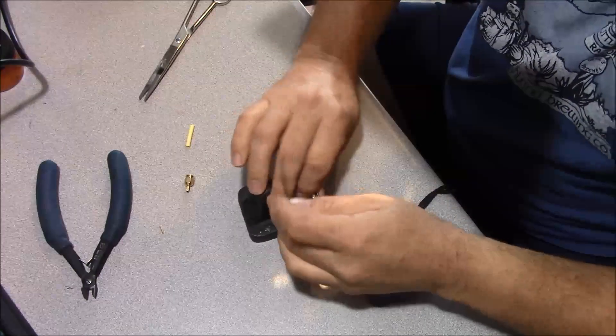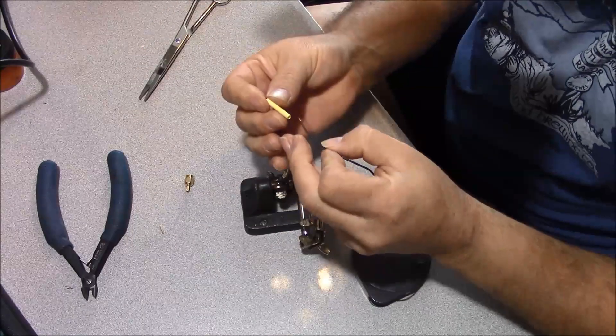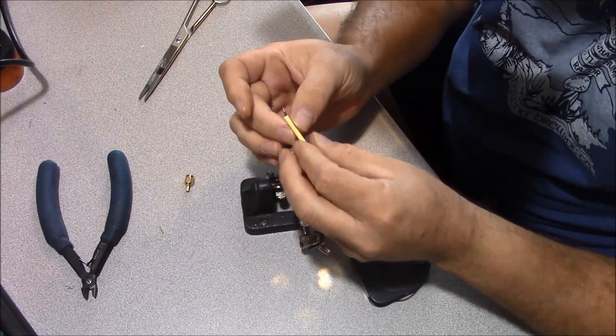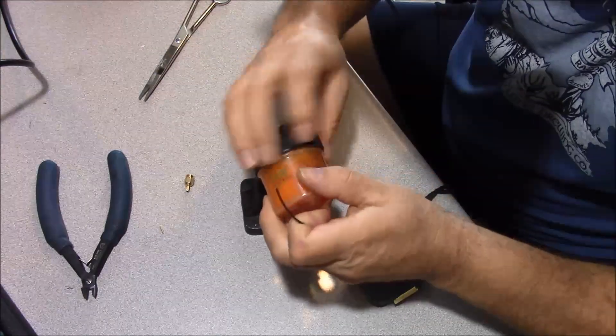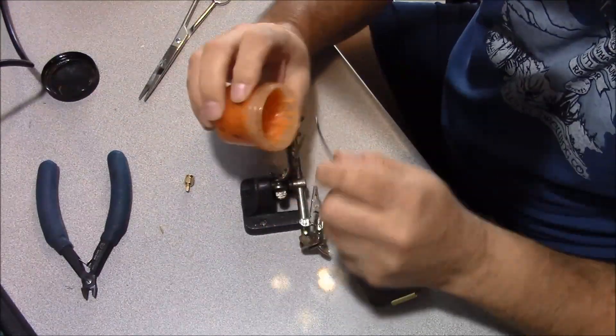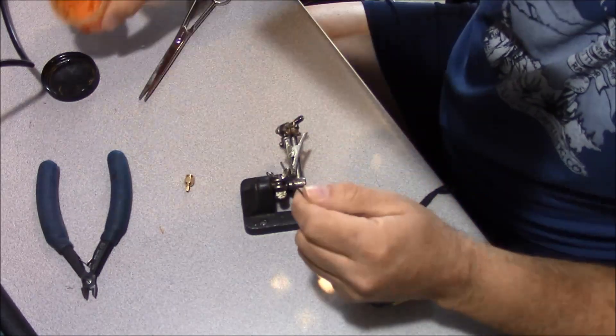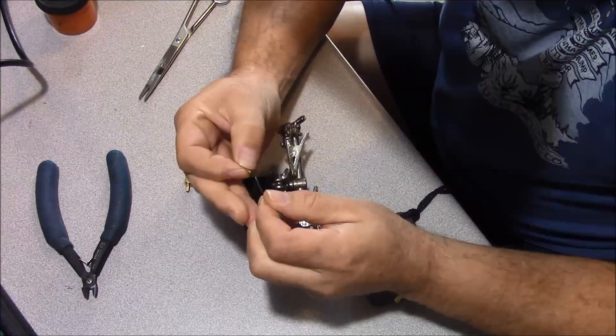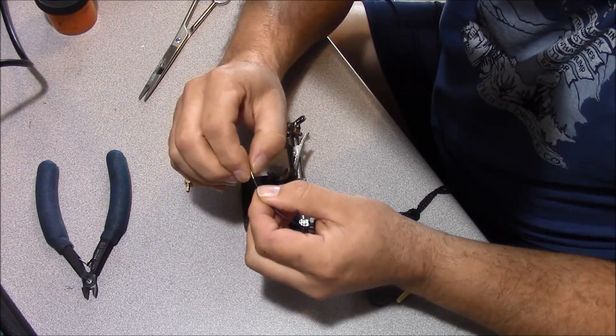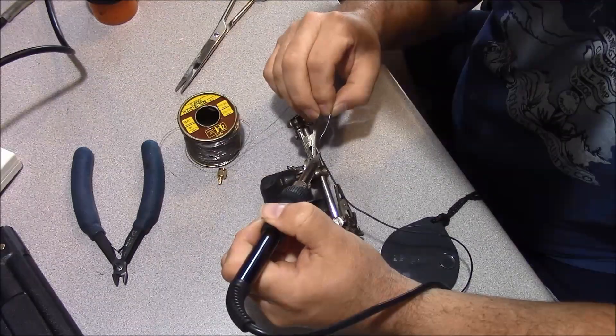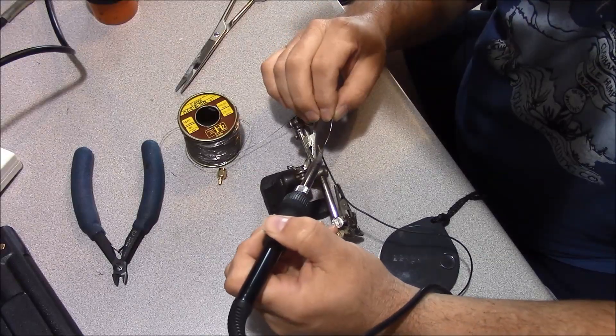Before you do your soldering, do yourself a favor and throw your heat shrink tubing on. I'll use a little bit of flux. Put your pin back on. Solder your connector.